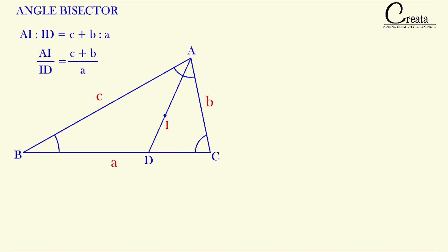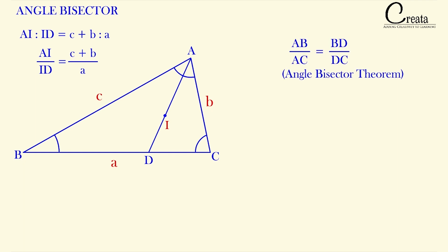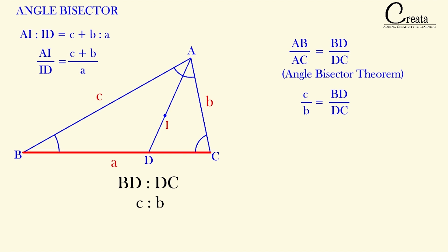Side AB is c and AC is b. By the angle bisector theorem, the angle bisector of any angle divides the opposite side in the ratio of the sides containing the angle. So BD : DC = c : b, and since BC = a, we can find BD and DC individually.